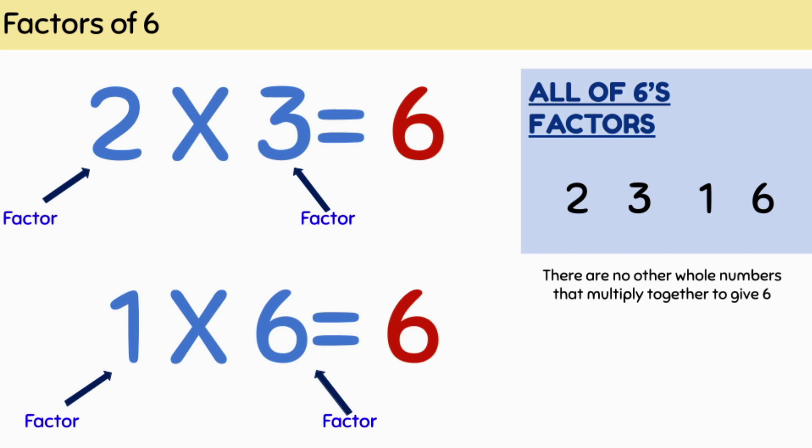Six also has more factors. For example, we can multiply one and six together to give six. Therefore, one and six are also factors of six. Six has four factors: two, three, one and six. There are no other numbers that multiply together to make six.